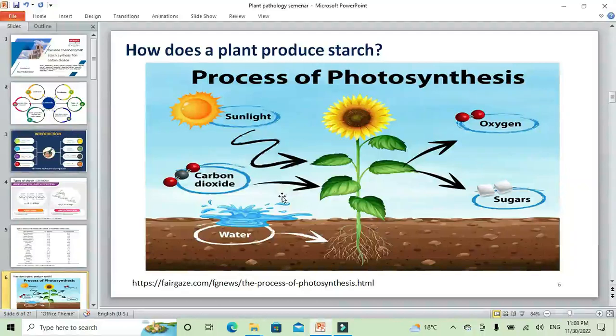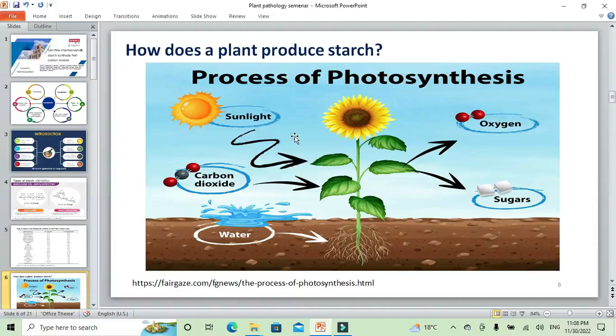We can ask ourselves how does the plant produce starch to understand what the hybrid system introduces in our research. As you see here, the plant can produce starch in the process of photosynthesis. The water here in the soil and the carbon dioxide in the presence of sunlight, the plant has the ability to produce oxygen and sugars, especially glucose.